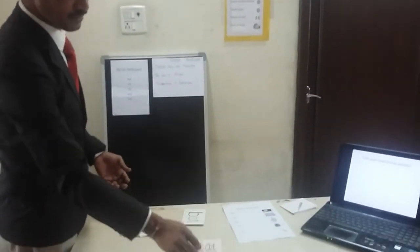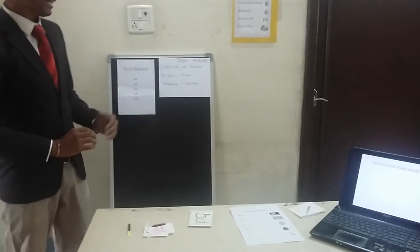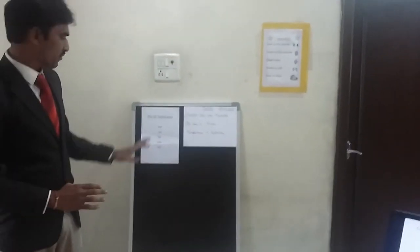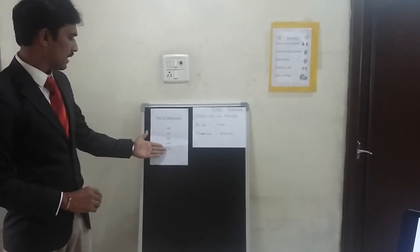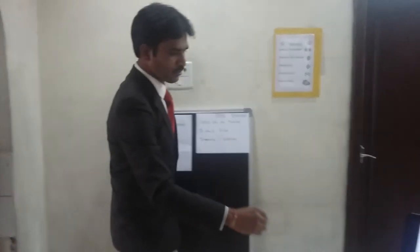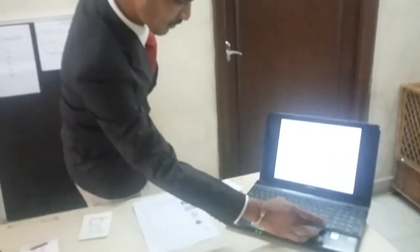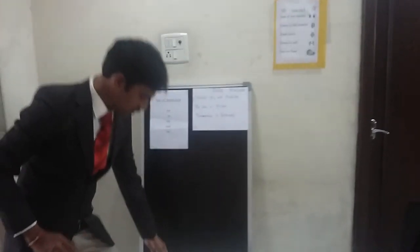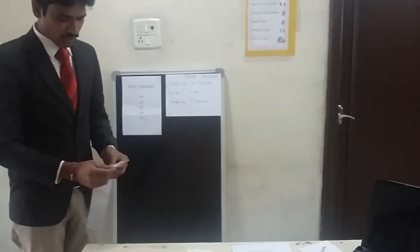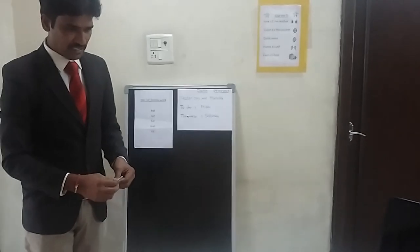So today we have done the AT family words. We learnt these five AT family words: bat, cat, fat, mat, and rat. There are some words on this — you can read them. Bat, cat, fat, mat, rat. That's great! I would like to give stickers to you for doing wonderful activities and wonderful work.